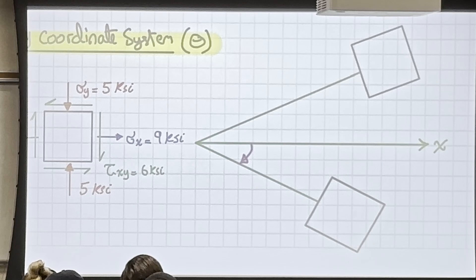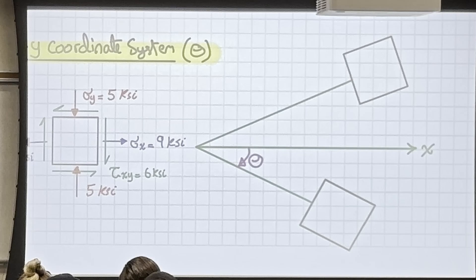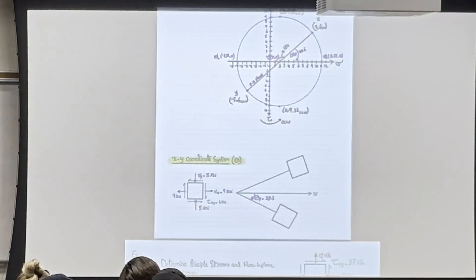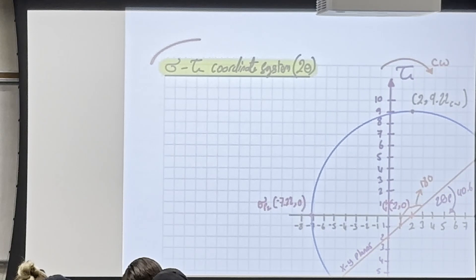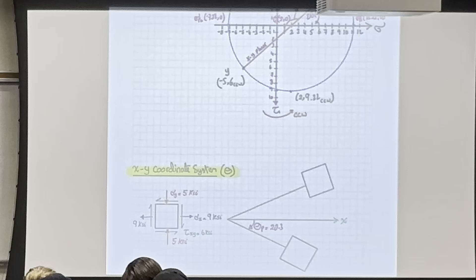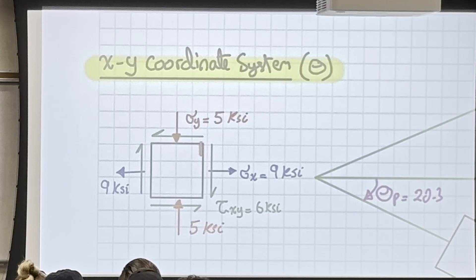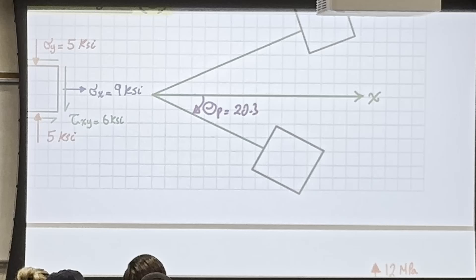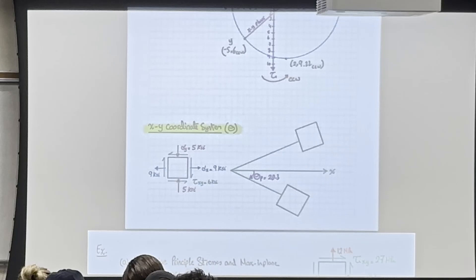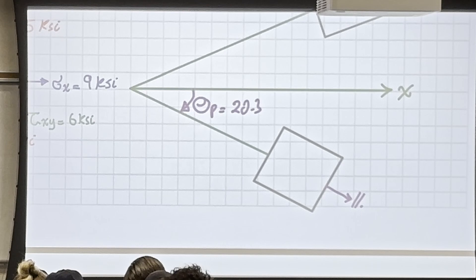Theoretically, the line between orthogonal planes always passes through the center. Now I want to draw the shear element. As a sanity check: 2θ_p was negative — meaning clockwise rotation. Also, (σ_x−σ_y)/2 was negative, meaning we are rotating to σ_p2, not σ_p1. This aligns with what Mohr's Circle shows. The 2θ_p is the rotation from the x-y plane to the principal plane.